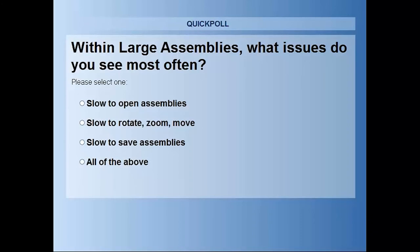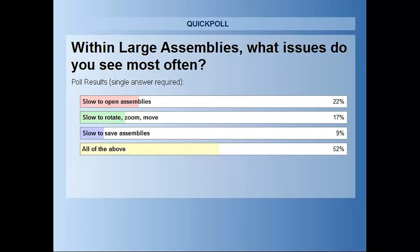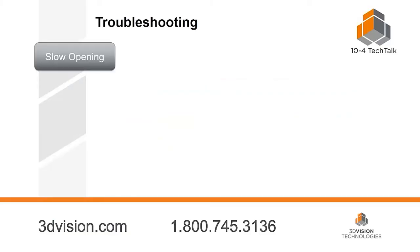Another poll question: within large assemblies, what issues do you see most often? Slow to open, slow to zoom or move around, slow to save, or all of the above? The results show the majority of people say all of the above, which makes sense — if you're having performance issues with assemblies, you're probably seeing a little of all of this.